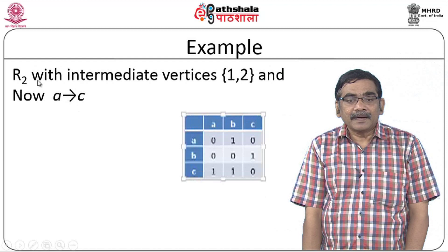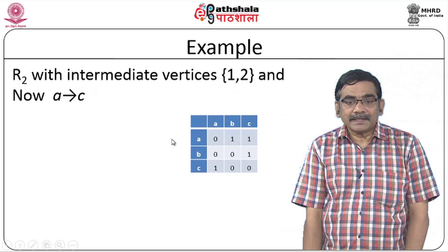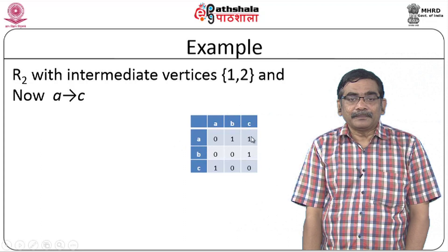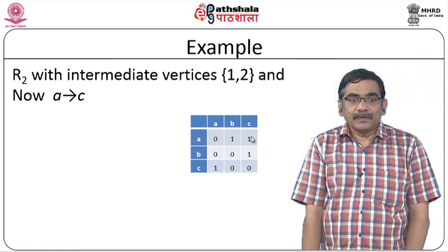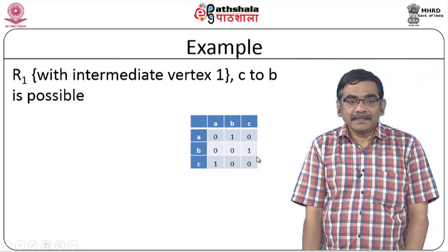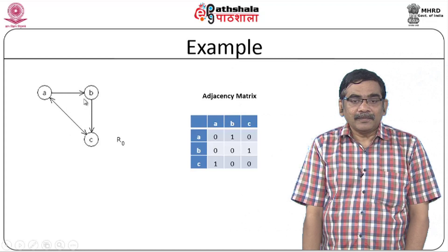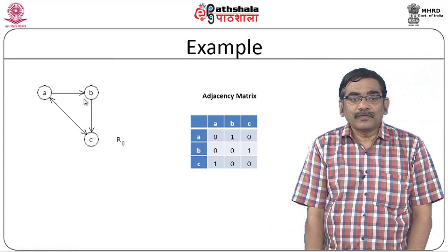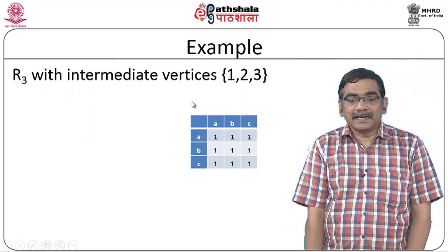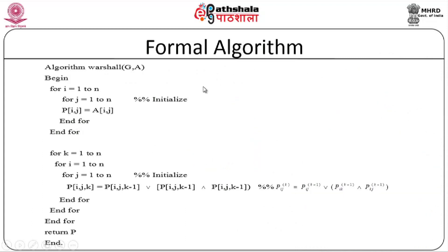The second node becomes active, and now we can see a path from A to C exists because this node is also available — A to C becomes 1. In the next iteration, the third node C is also made active, meaning all paths are recomputed. When all nodes are available, we can go from any node to any other node — this results in a fully connected graph, and this is what the final path matrix looks like.